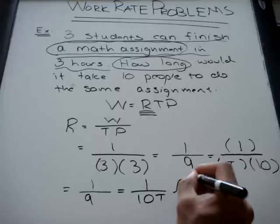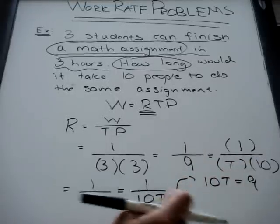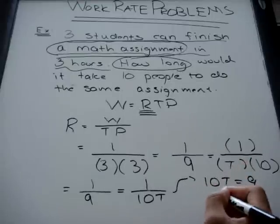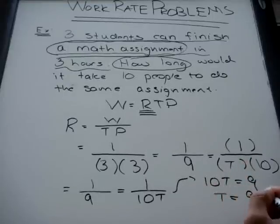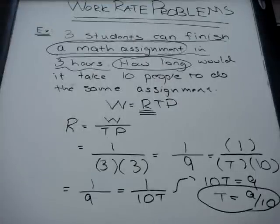We can cross multiply and we get ten T is equal to nine. Cross multiplication and dividing, you get T is equal to nine tenths, which means it will take nine tenths of an hour. If you want to convert it to minutes, just multiply that by sixty, which is going to give you a total of fifty four minutes, a little bit less than an hour.